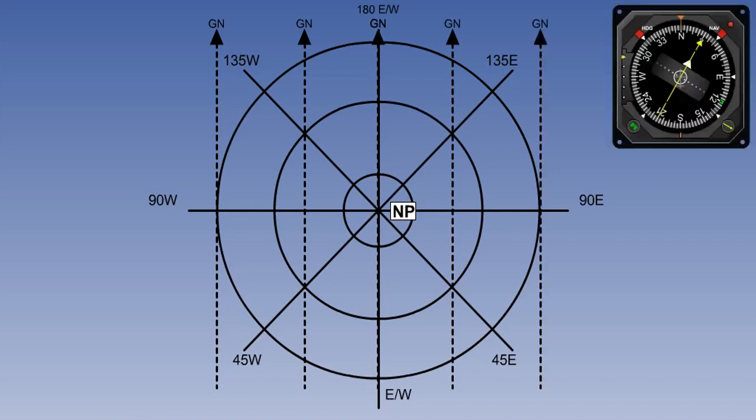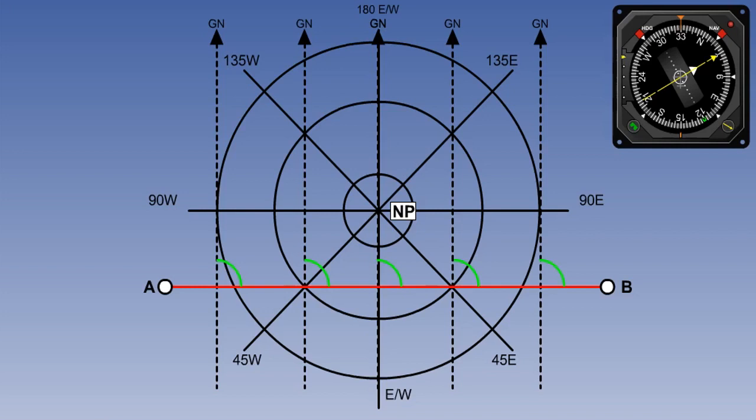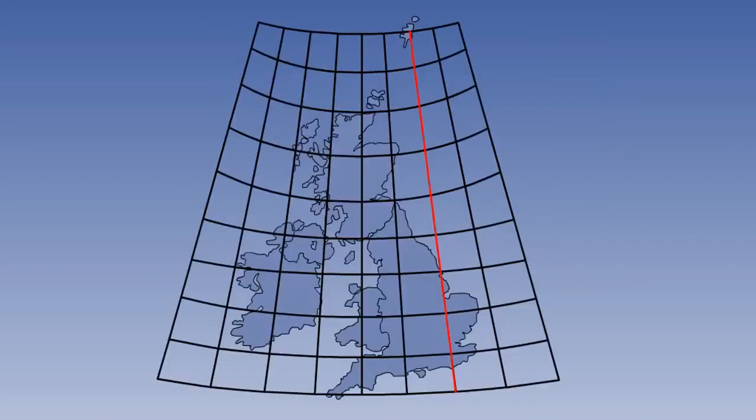We also have to align our compasses to grid north, not true north, and keep its direction up to date as we fly along the track. But at least now we have a track that can be defined by a constant direction. There are various different methods for selecting the datum direction for grid north, but for the EASA ATPL syllabus, the datum chosen will always be a meridian of longitude.